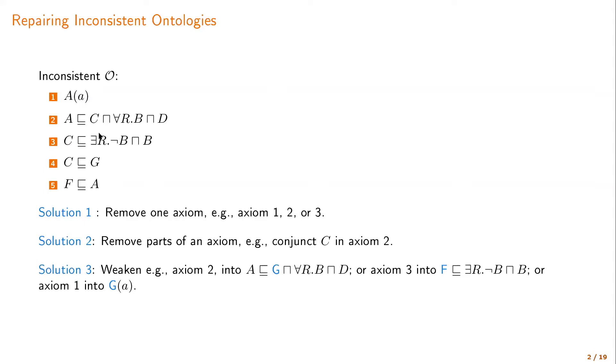However, there is an even more subtle solution, which is to weaken axioms by using the information of the ontology to find ways to weaken the axioms without losing parts of the axiom altogether. For example, since the ontology says that C is subsumed by G, we could replace axiom by replacing C by G and say that A is contained by G and for all R, B and D. Also, we could weaken other axioms in this way, regain consistency by preserving more of the ontology.